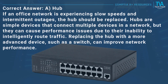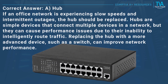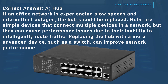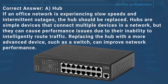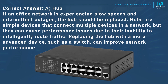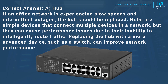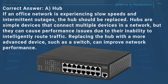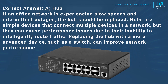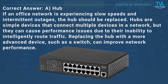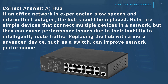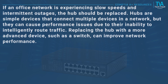Correct answer: A, hub. If an office network is experiencing slow speeds and intermittent outages, the hub should be replaced. Hubs are simple devices that connect multiple devices in a network, but they can cause performance issues due to their inability to intelligently route traffic. Replacing the hub with a more advanced device, such as a switch, can improve network performance.